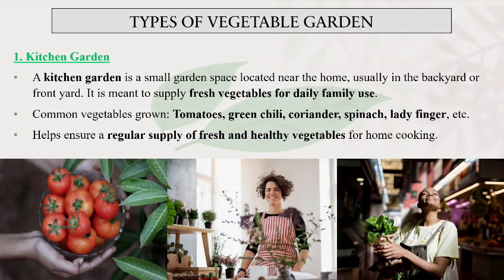Kitchen garden is a small garden space which is located near the home — usually your backyard or front yard. It is where you grow fresh vegetables for daily family use. We call it kitchen garden because the vegetables are grown for regular home cooking supply. Which vegetables can be used? Mostly those that need more care and can easily grow in our house — for example, tomatoes, green chilies, coriander, spinach, and ladyfinger.